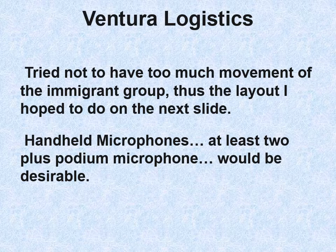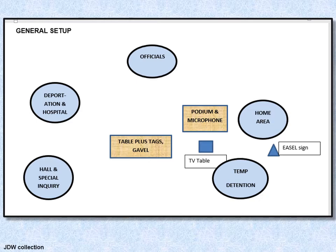For the Ventura logistics, I tried not to have too much movement of the immigrant group. We need a bunch of handheld microphones — at least two — and the podium microphone as well: one for myself as moderator and slide describer. There are different areas the immigrants move through, eventually all ending up back at the home area, including the two people who were deported because I tell the audience they came back in 1916 and eventually became citizens.